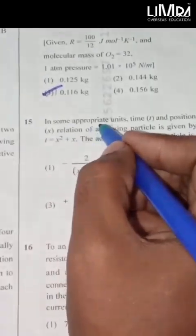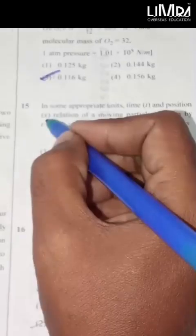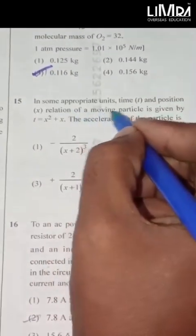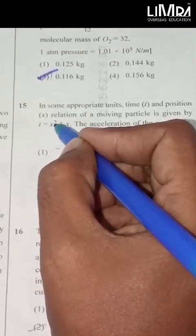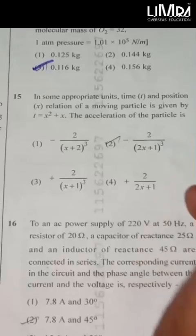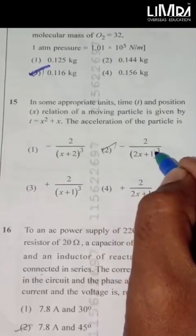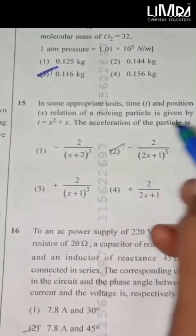In some appropriate units, time t and position x relation of a moving particle is given by t is equal to x square plus x. The acceleration of the particle is minus 2 by 2x plus 1 whole power cube.